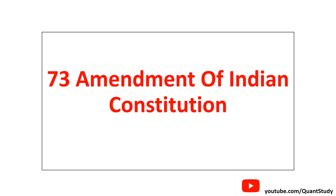This amendment came in 1992. It established Panchayati Raj with three parts: the first is the Gram Panchayat, which is the village level; the second is the Mandal Parishad, which is the block level — when many villages come together, that forms the block; and the third level is the Zilla Parishad, which is the district level. Basically the motive was to decentralize power — people at the local level would have power in their hands.